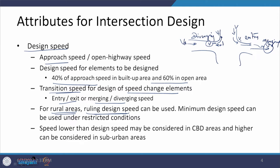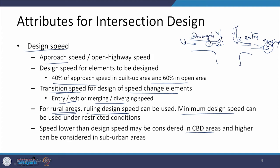There can also be restricted conditions, and in those cases a minimum design speed is specified. For example, on a plain terrain national highway and state highway, the ruling and minimum design speeds are 100 and 80 km/h respectively. In CBD areas — the central business district — speed can be lower than the design speed, while in suburban outer fringes it can be considered a bit higher, and we take decisions accordingly based on the scenario.